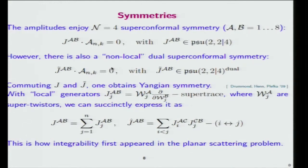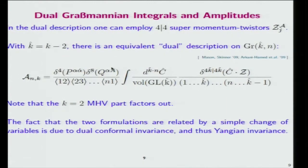As shown by Drummond and Plefka, if you commute J and J tilde, one obtains so-called Yangian symmetry. These Yangian generators, which you get from this commutation, are bilinears, bilocal along this chain of particle scattering. In fact, this is how integrability first appeared in the planar scattering problem. It was just an observation at this point.